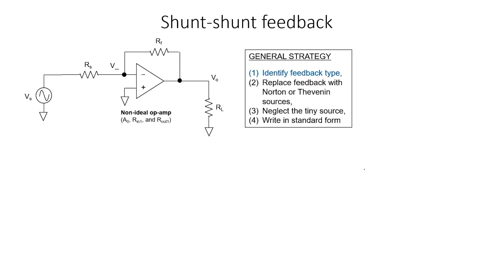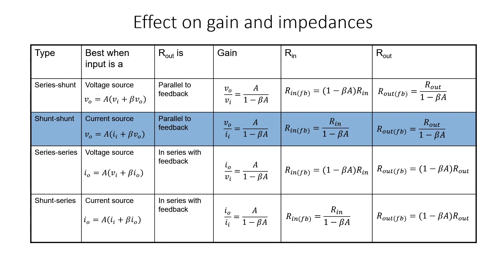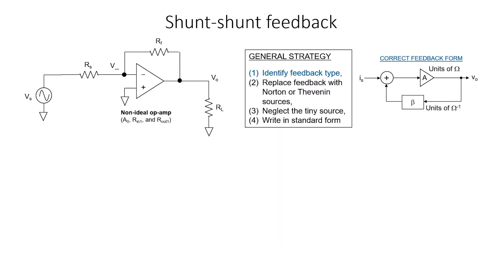Beta should have the units of inverse ohms. If we look back at the circuit, however, this is not what we have. The correct form of the feedback is now shown. Furthermore, with shunt-shunt feedback, we expect the gain to be reduced, we expect the input impedance to be reduced, and we expect the output impedance to be reduced relative to the case of the amplifier without the feedback. The correct feedback form shows that the input is a current, but our circuit shows the input as a voltage, so we're going to have to do something about that.